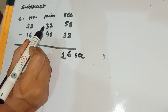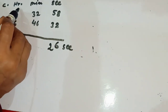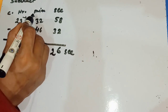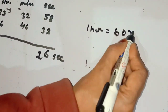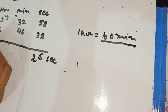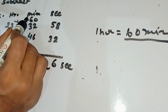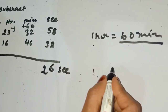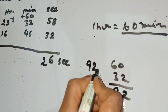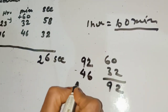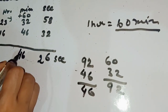Now the minutes: 32 minutes and 46 minutes. We are not able to subtract 46 from 32, so we take 1 carry from the hours. When we take 1 carry from hour, remember: 1 hour is equal to 60 minutes. So we add 60 and 32, which gives 92. From 92 we subtract 46: 12 minus 6 is 6 and 8 minus 4 is 4, so it is 46 minutes.